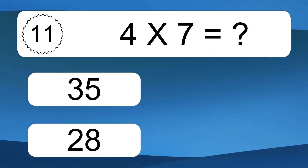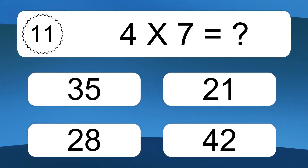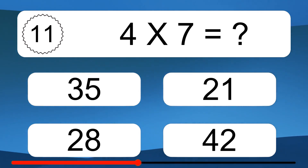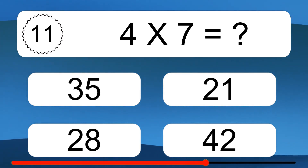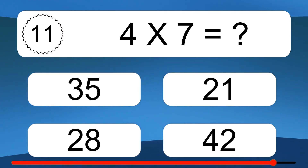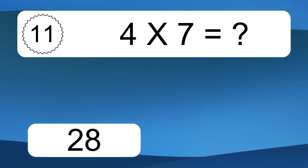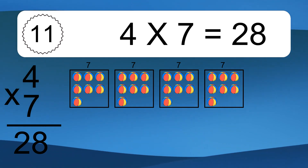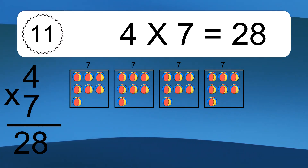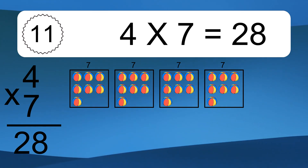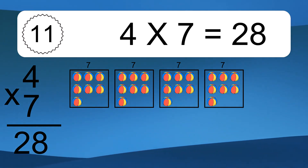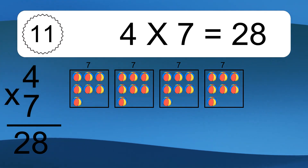Four times seven equals what? Four times seven equals 28. We have four boxes, and each box has seven colorful balls inside. If you count all the balls in all the boxes together, you will have 4 times 7 balls. This equals 28 balls.